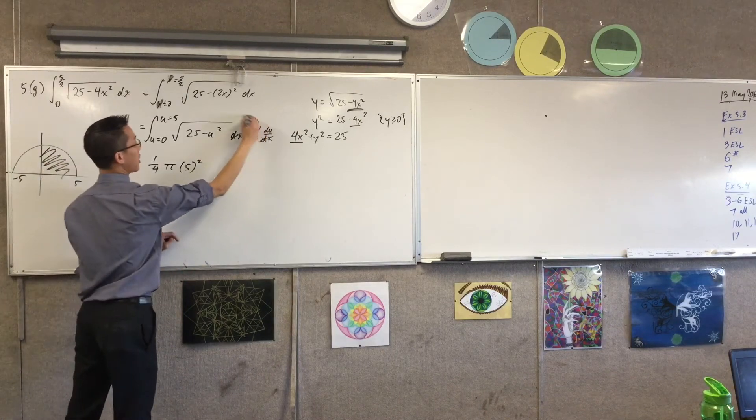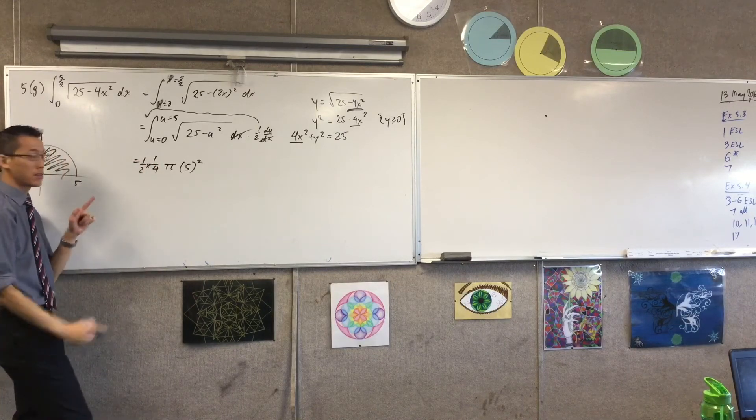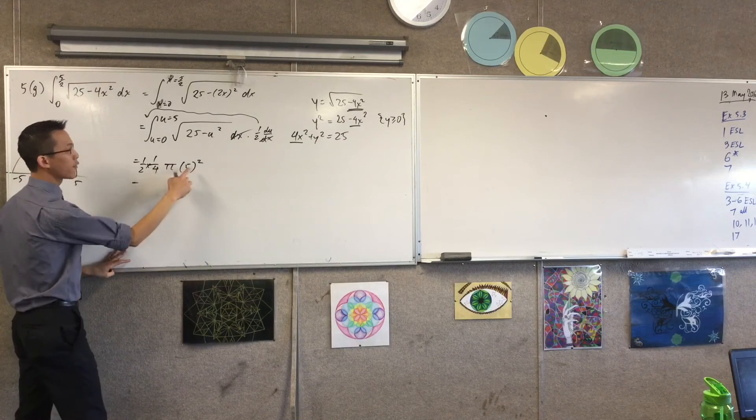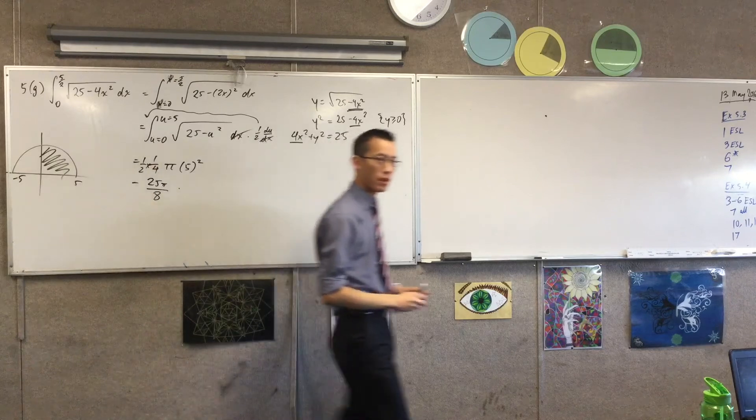there's actually a half here, which I could have put at the front here. So I'm going to just multiply through by that. Does that make sense? It's definite, so that's why there's no constant of integration. So it looks like I've got 25 pi on 8. Bam.